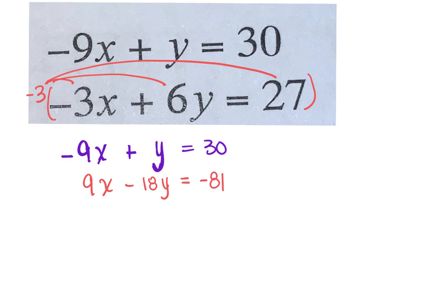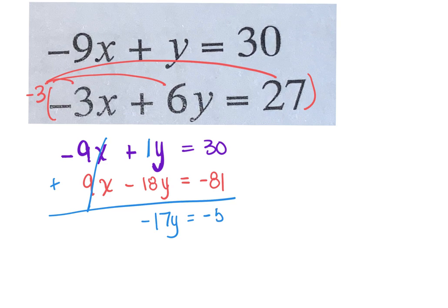Now we are ready to add down. Here I have a negative 9x and a positive 9x — those will cancel. I am going to get 1y and a negative 18, which gives me negative 17y. And 30 and negative 81 give me negative 51. That is evenly divisible by 17, so I'm going to divide both sides by negative 17, and I will get y equals 3.